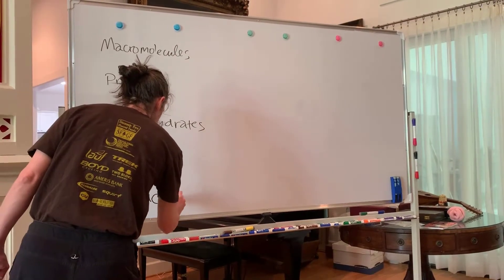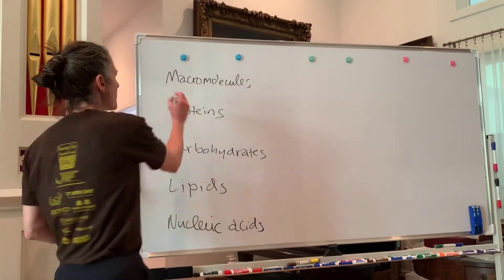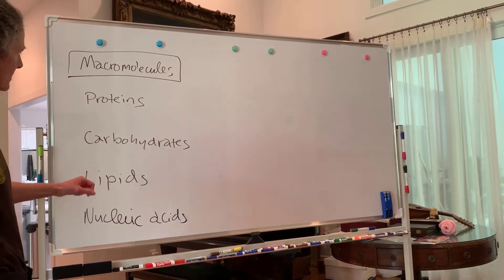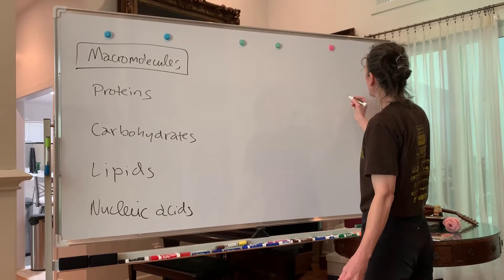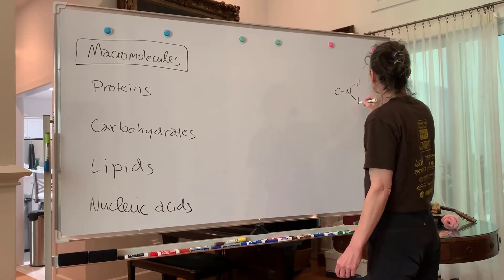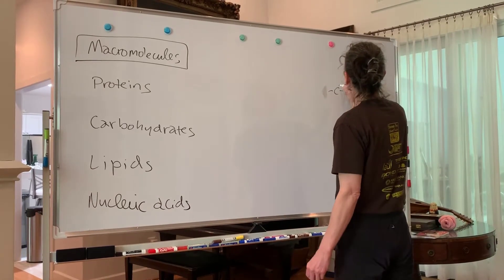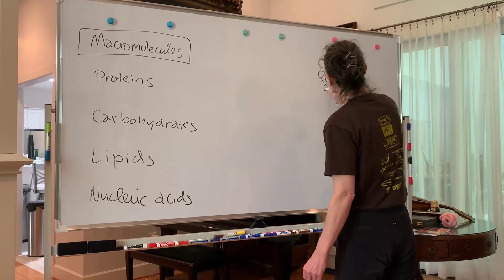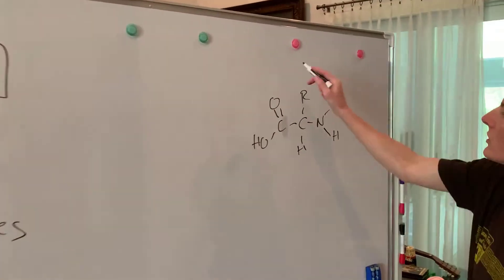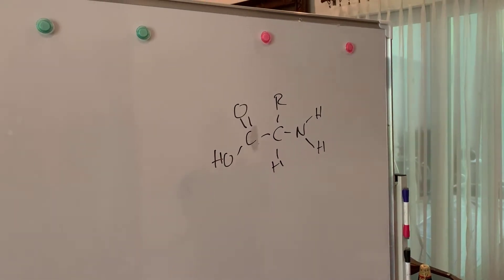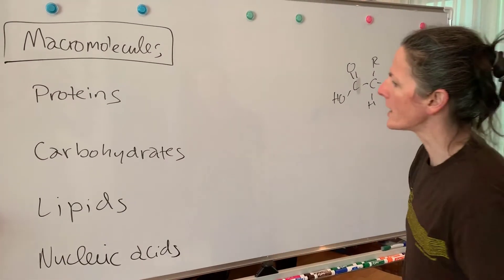We're going to want to digest these large macromolecules and turn them into small things — their individual building blocks or monomers. For proteins, we have amino acids. An amino acid has a structure with an alpha carbon, a side chain, an amino terminus, and a carboxy terminus. Chains of these form proteins, and this is the monomer for proteins.